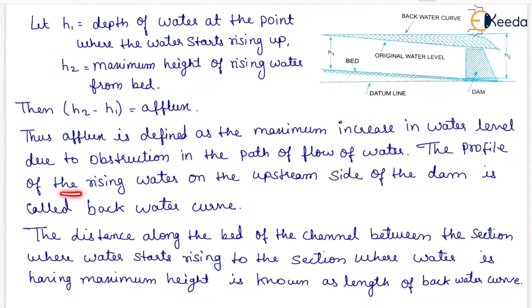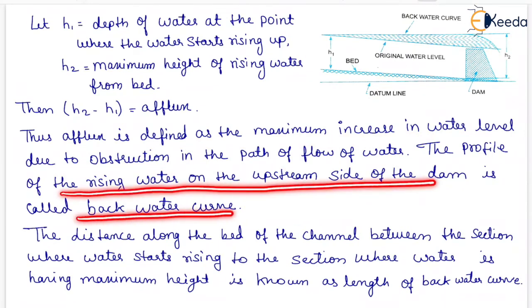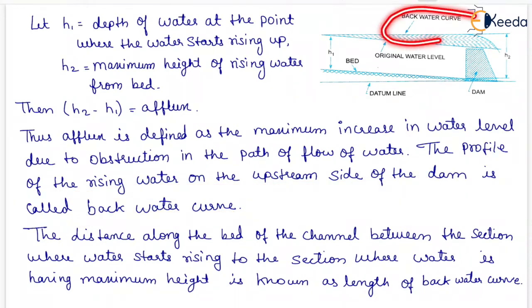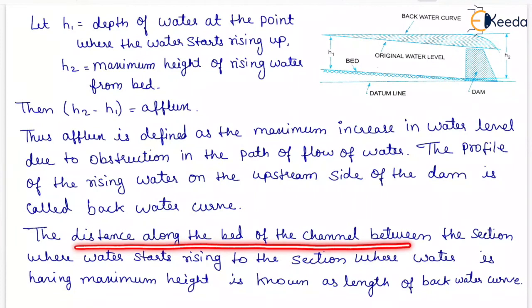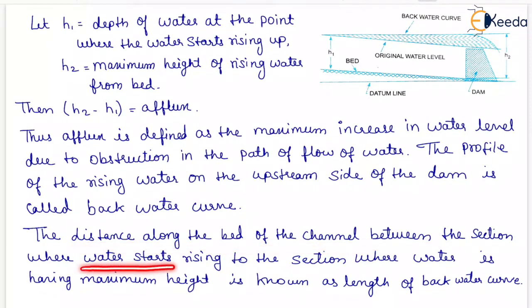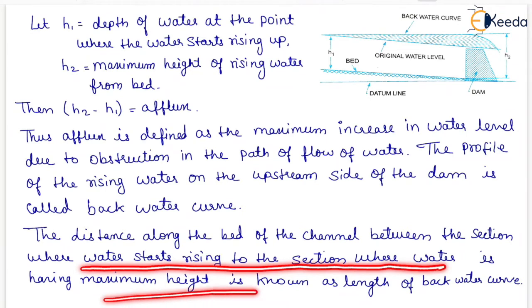The profile of the rising water on the upstream side of the dam is called backwater curve which is shown here. The distance along the bed of the channel between the section where water starts rising to the section where water is having maximum height is known as length of backwater curve.